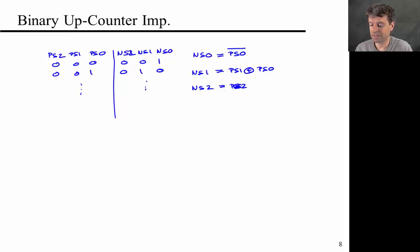In fact, if you had an n-bit counter, it would just continue like that, such that next state i would be equal to present state i XOR the product of all the lower order bits, present state (i-1) down to present state 0.